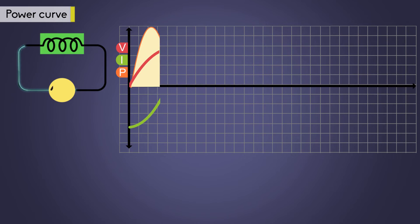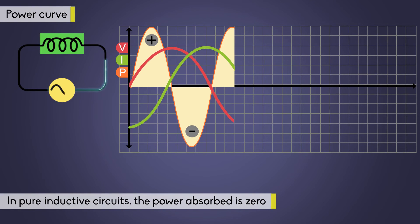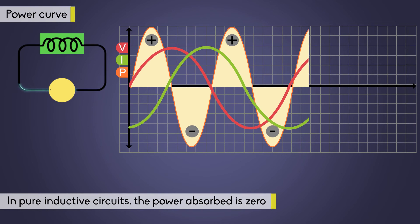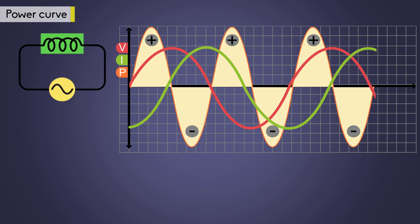So, in pure inductive circuits, the power absorbed is 0. Even the power curve suggests that the power over one complete cycle is 0. We can see the alternative positive and negative values of the power. Hence, we can conclude that the net power is 0.